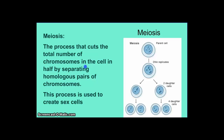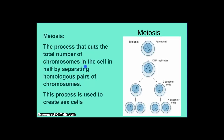The official definition: meiosis is the process that cuts the total number of chromosomes in the cell in half by separating homologous pairs of chromosomes, and this process is used to create sex cells. In this diagram showing the general process, we take one normal body cell — called a parent cell — and make four daughter cells. If you look at those daughter cells, they have half the number of chromosomes as the original parent: one long, one short, instead of two long and two short.